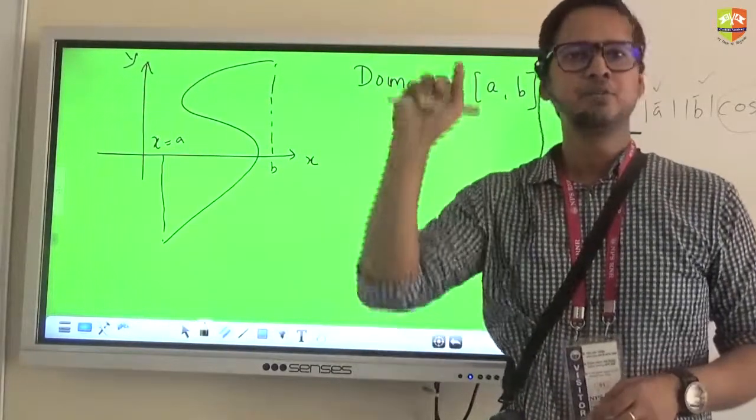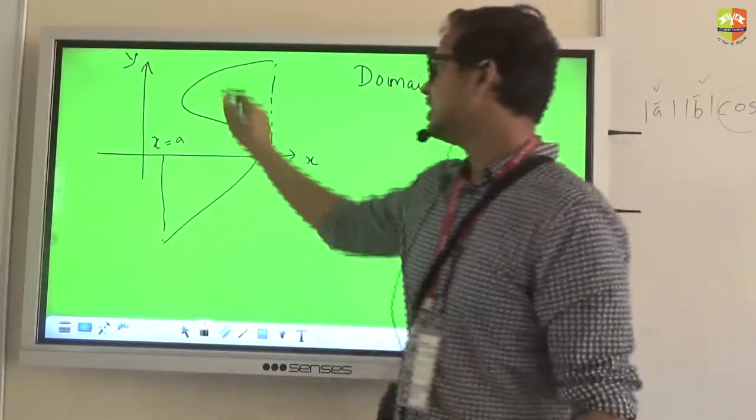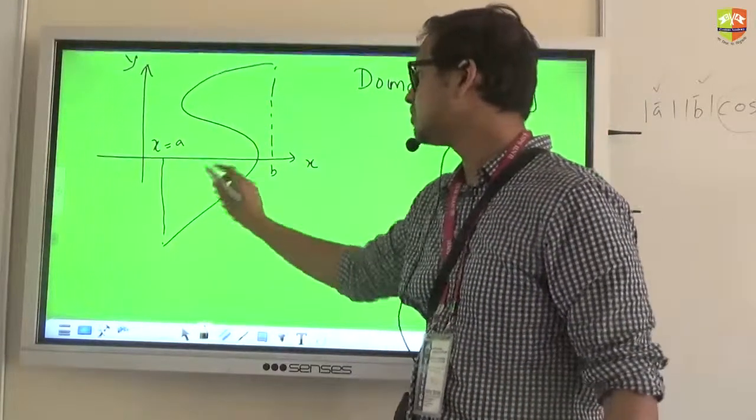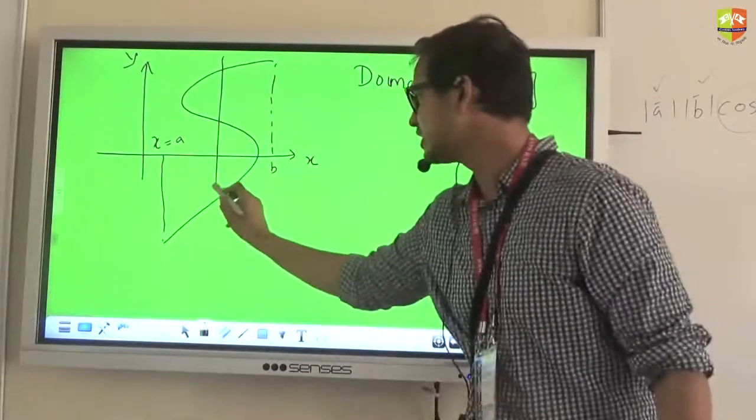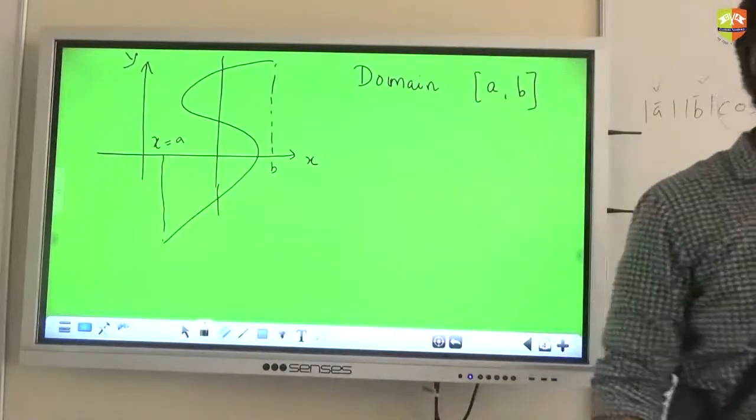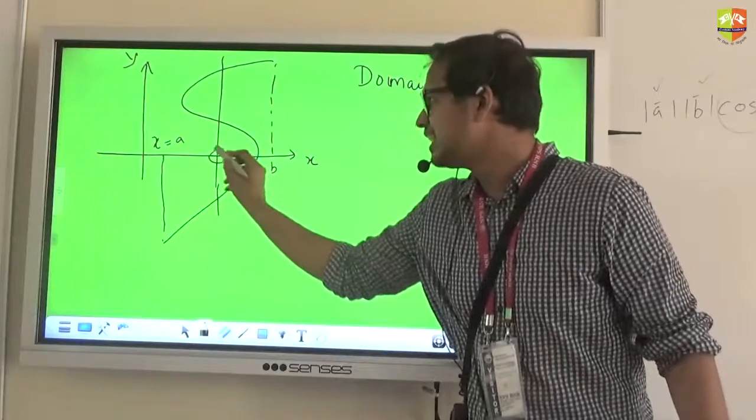Because for the same x value there are multiple y values, which violates the second criteria. Therefore it's not a function. Absolutely brilliant. Bang on target. What we said, I'll summarize you in simple language. We said that if I draw a vertical line like this, in fact let me extend this down as well.